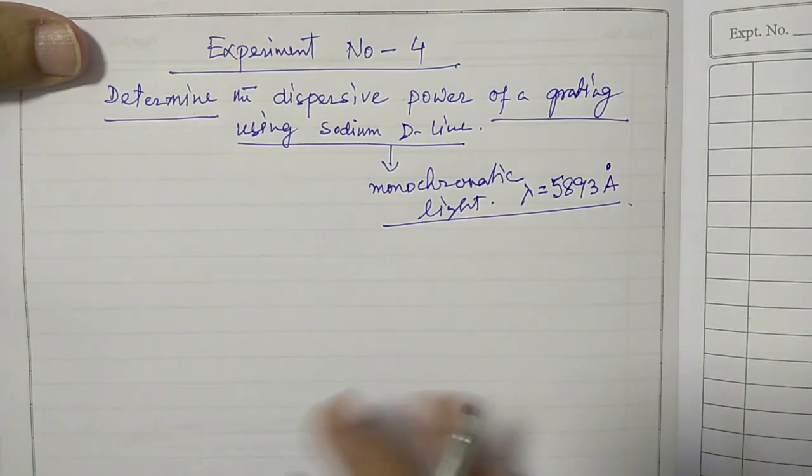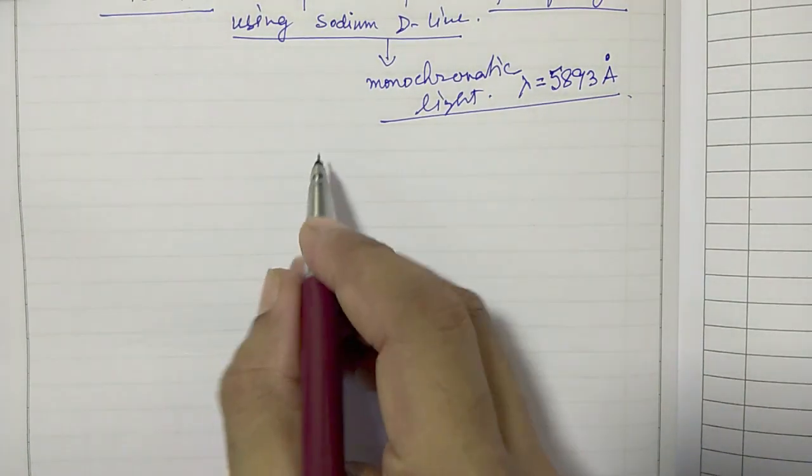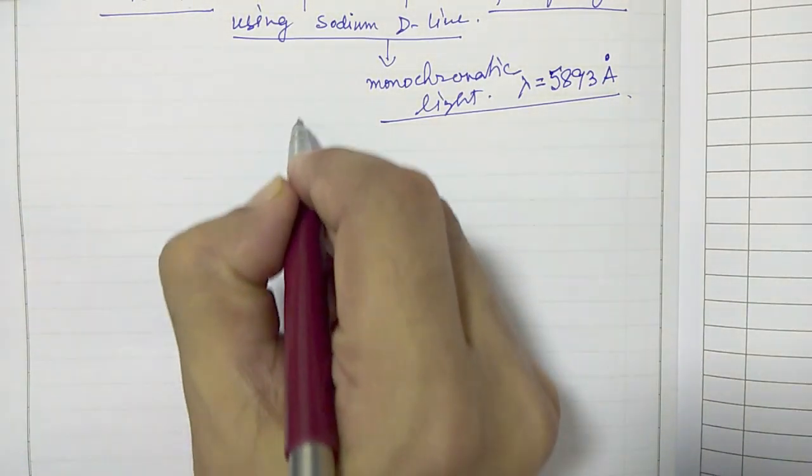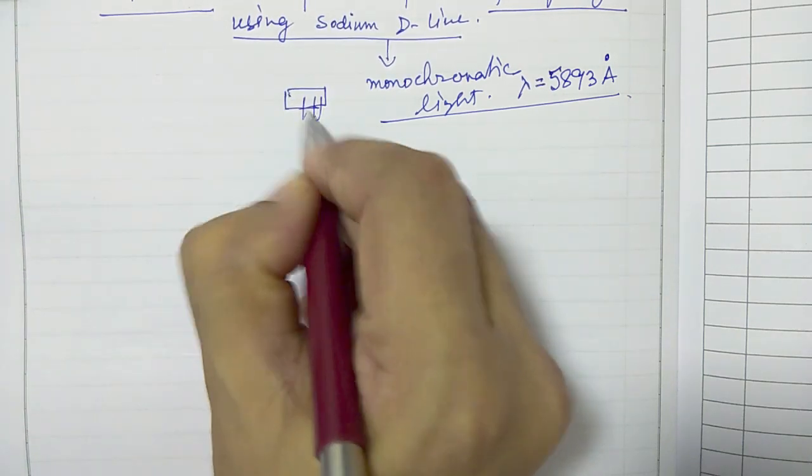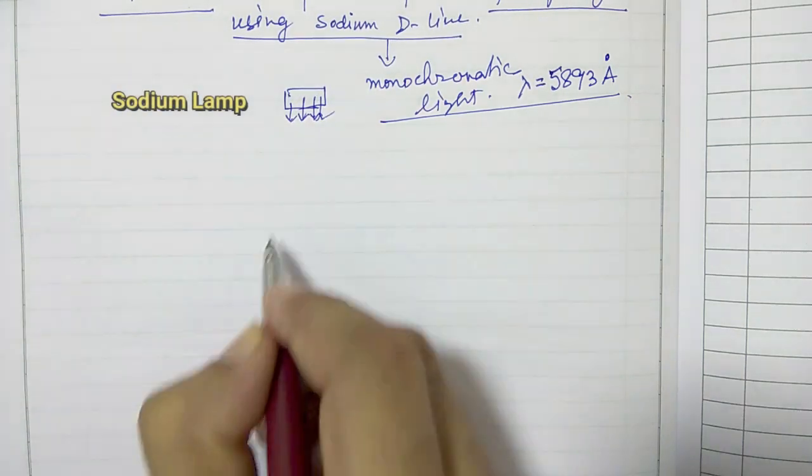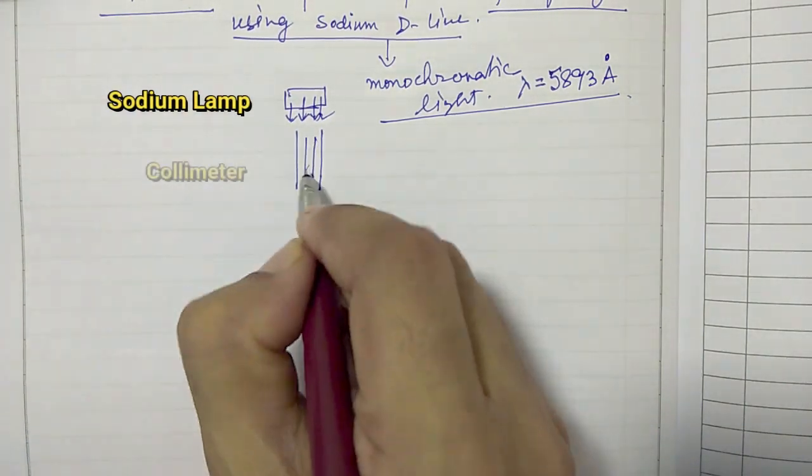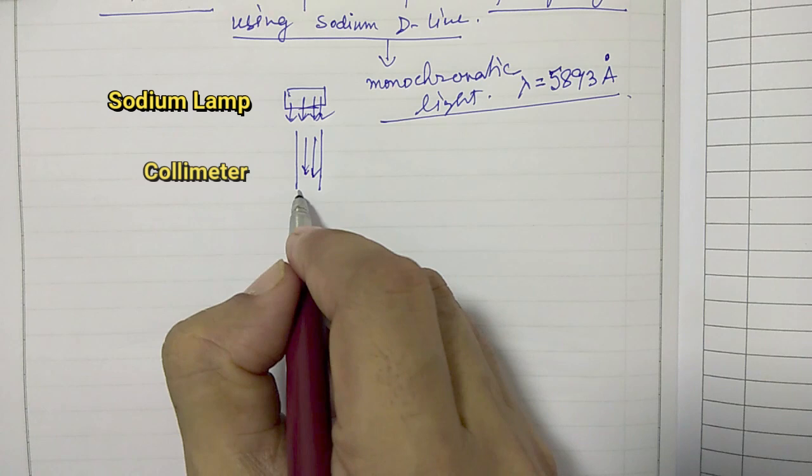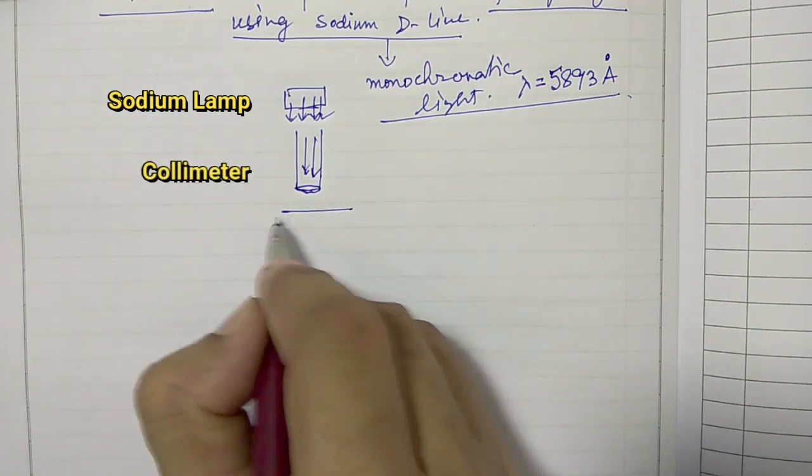Then as I showed in the last video, the experimental setup is such that there is a lamp here. The lamp produces light, then there is a collimator, so the light becomes parallel, then you have a grating here.